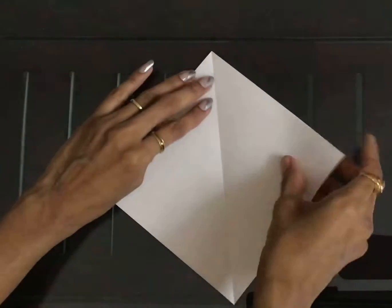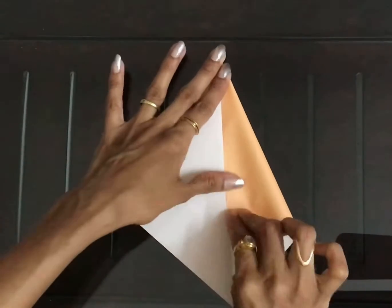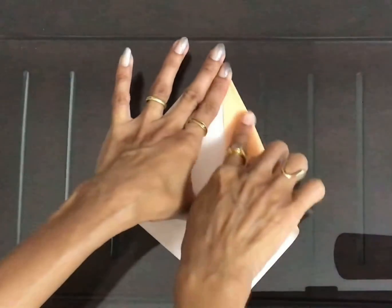Bring these two sides to the center crease. This is called the kite base.